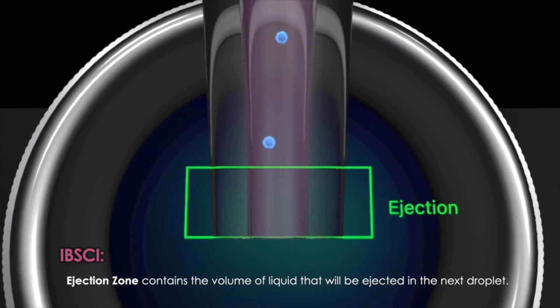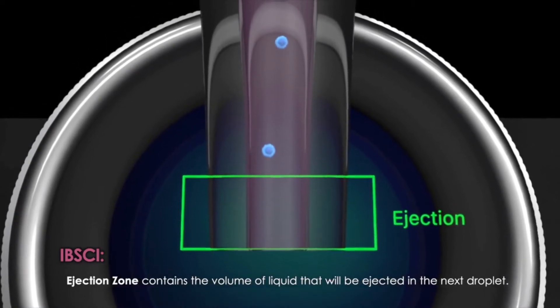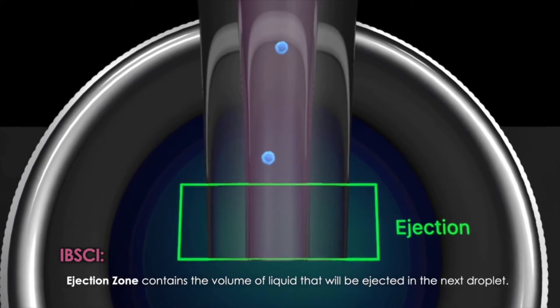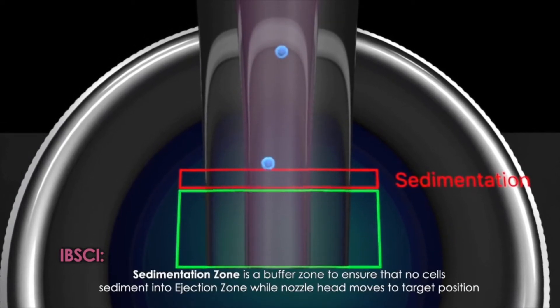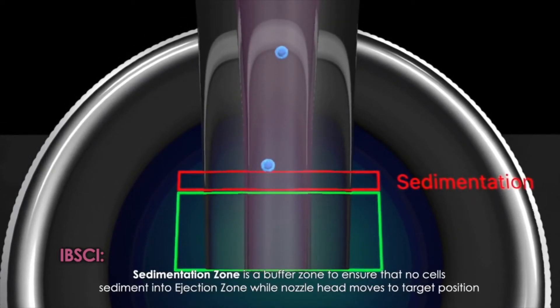On-board algorithms interrogate the contents of the upcoming drop volume for any cells of potential interest. The tip of the nozzle is divided into two functional regions, an ejection region and a sedimentation region.